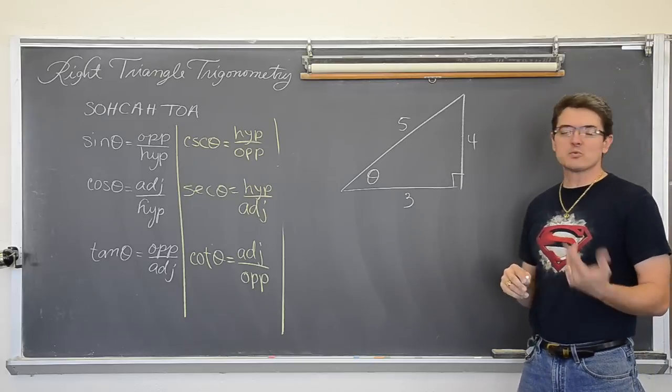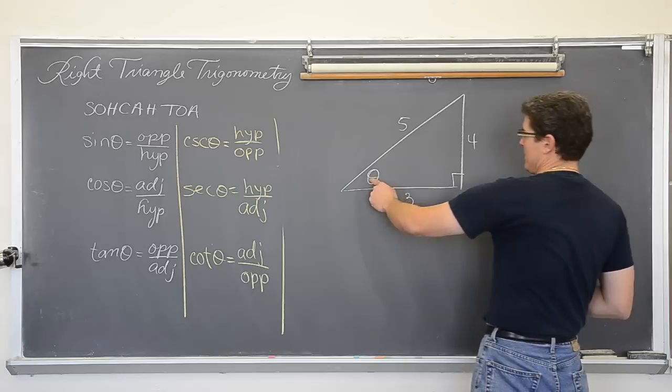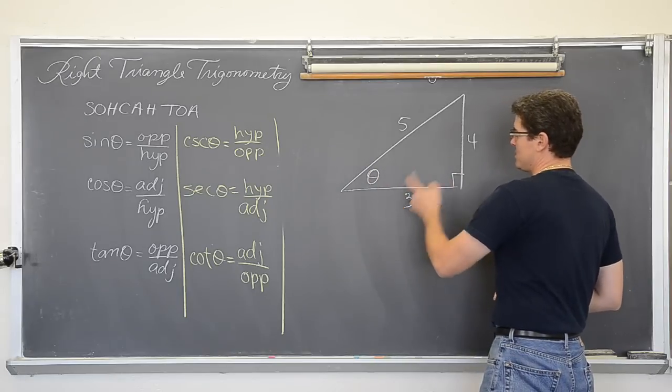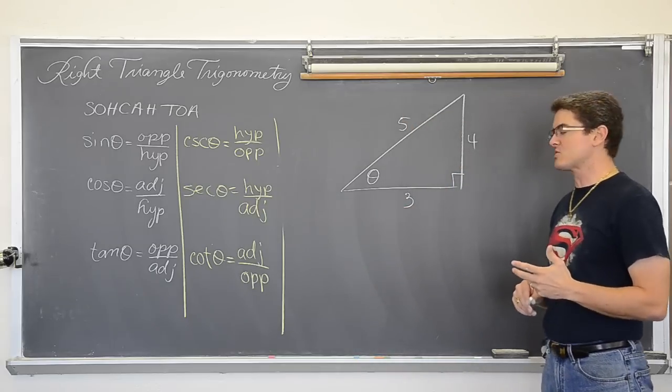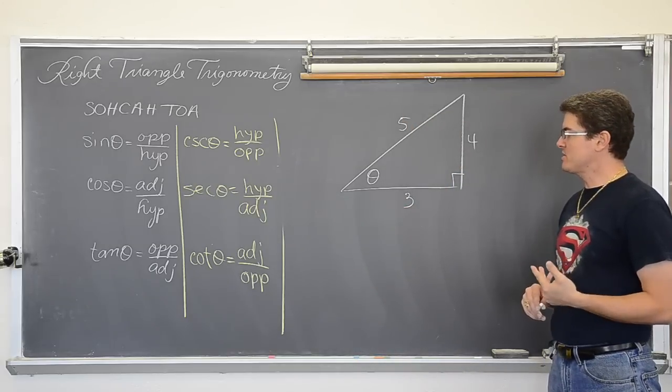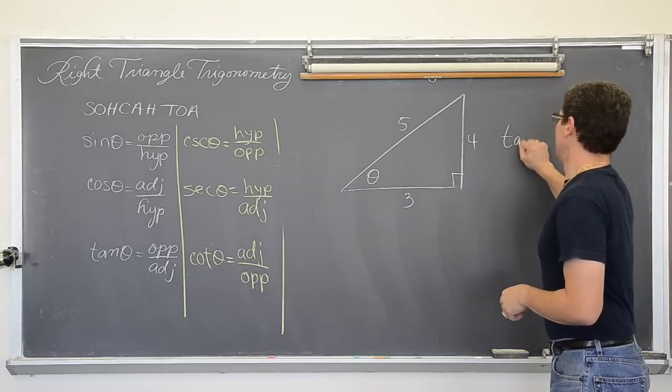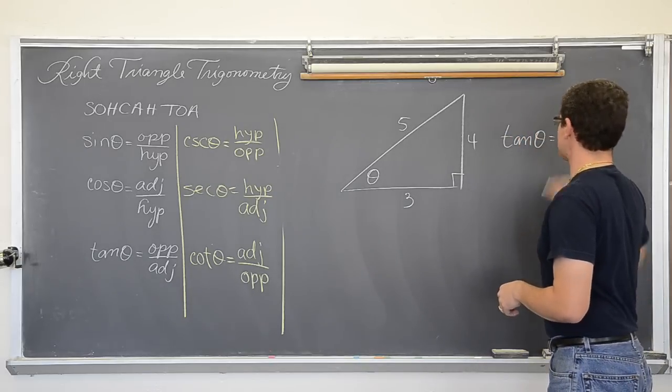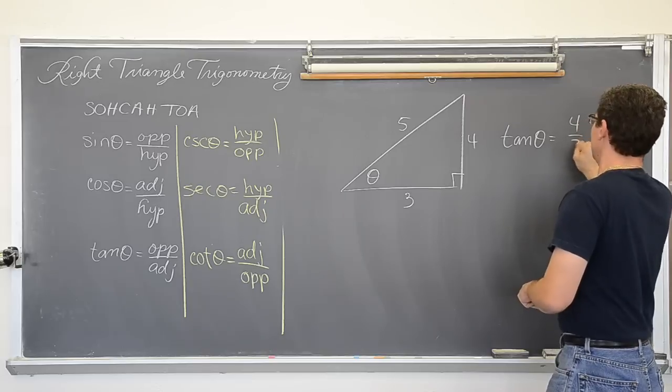So you can use whatever trig function you like. We are going to use some kind of trig function to find out what the angle measure is using any one of these three sides since I have given you so much information about this triangle. How about we just use tangent. So we have the tangent of theta equals opposite over adjacent which is going to be 4 thirds.